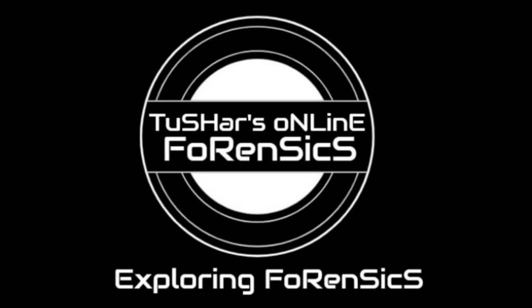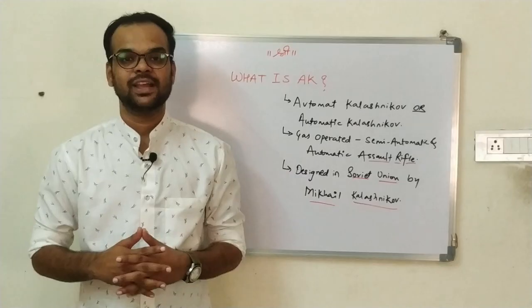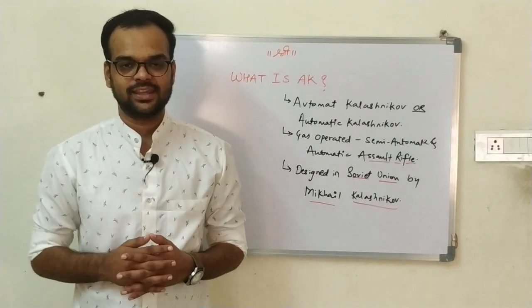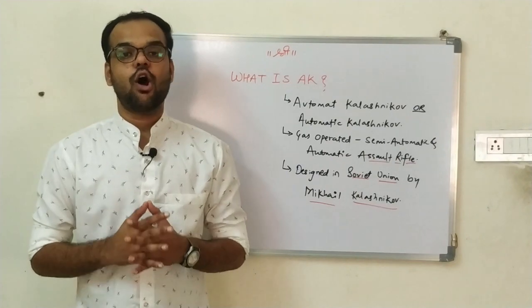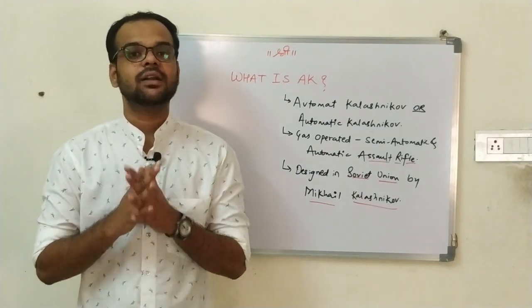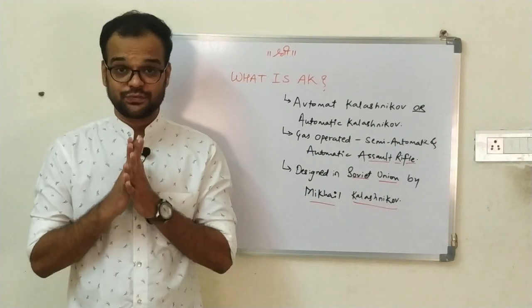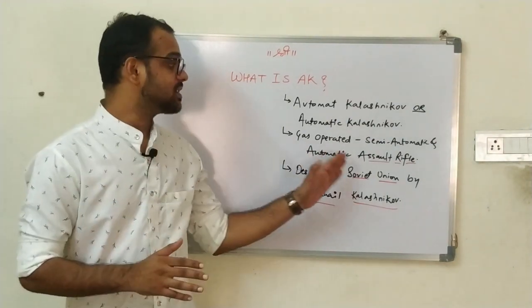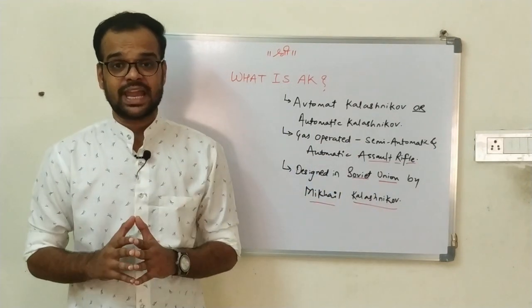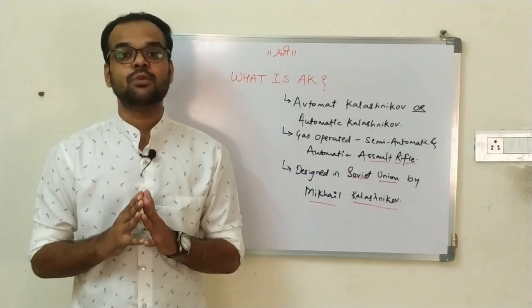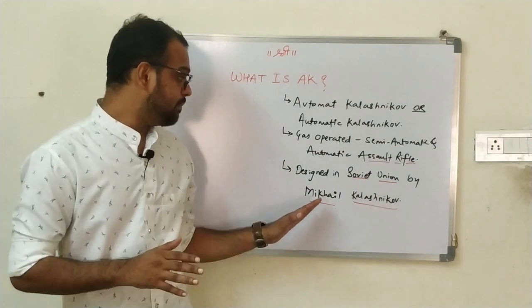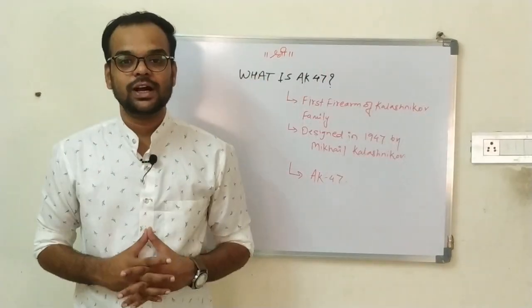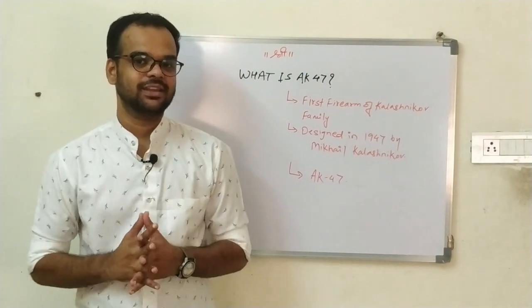So without any delay, let's explore the AK family. AK stands for Automat Kalashnikov, or Automatic Kalashnikov. This firearm is a gas-operated, automatic and semi-automatic assault rifle which was designed in the Soviet Union by the Russian small arms designer Mikhail Kalashnikov.